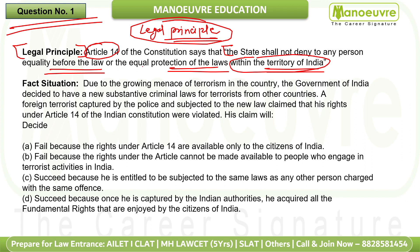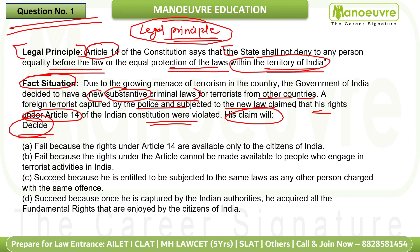The fact situation: due to the growing menace of terrorism, the Government of India decided to enact a new substantive criminal law defining crime liabilities. A foreign terrorist captured by police was subjected to this new law and claimed that his rights under Article 14 of the Indian Constitution were violated. We have to decide whether his claim will stand. Article 14 uses the phrase 'any person,' which applies to everyone — Indian citizens and foreigners alike — within Indian territory.